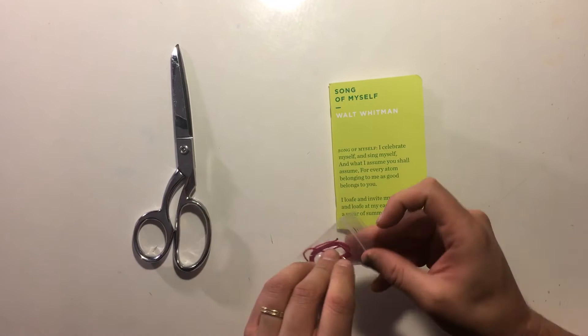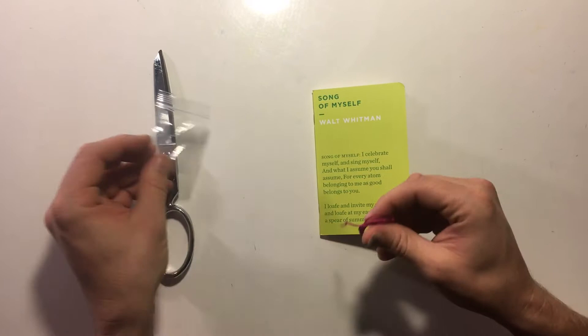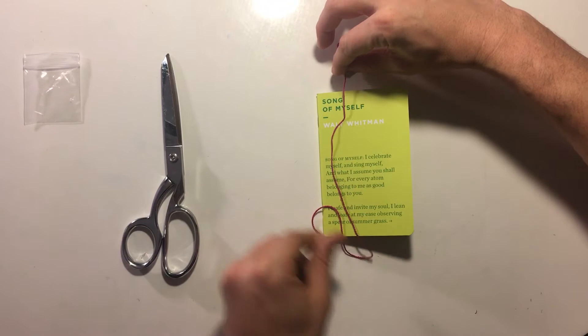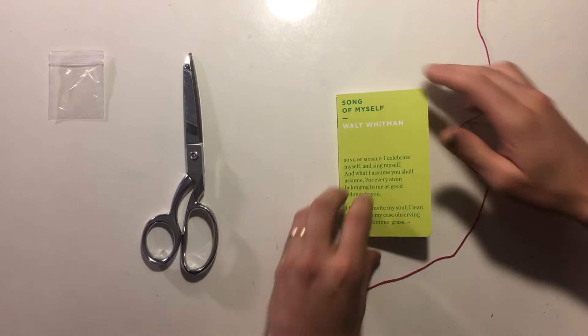So the first thing you do, step one, is to take the string out of the bag. And we pre-cut the string to be a little more than three lengths of the book. So this is about three and a half, that's good. Having a little bit extra is not bad.